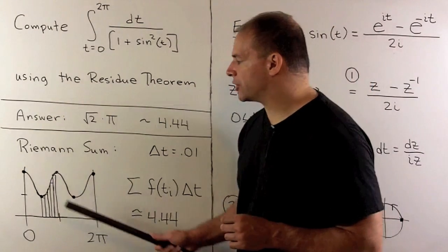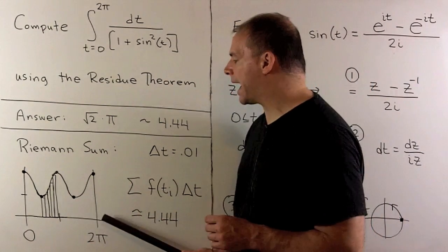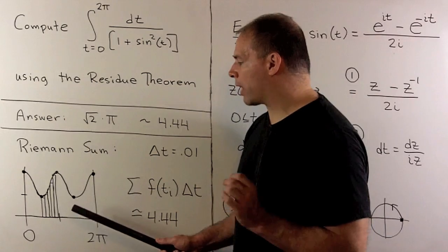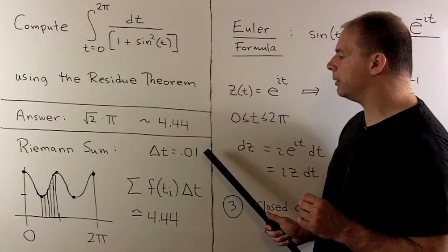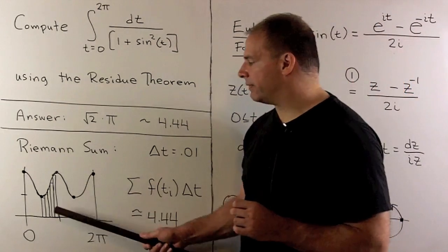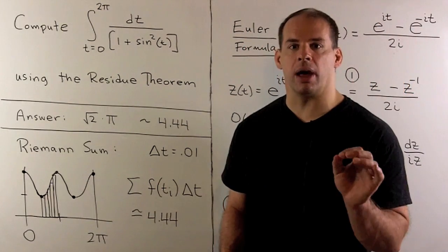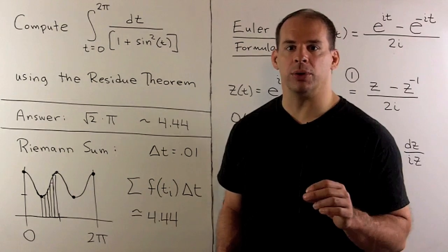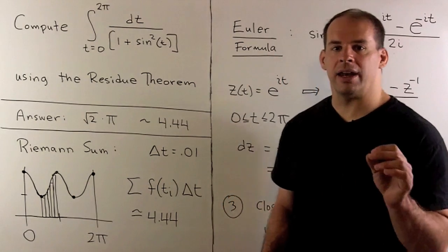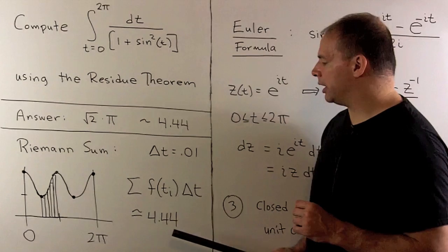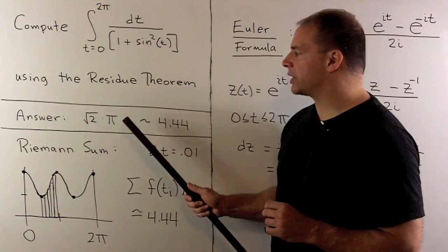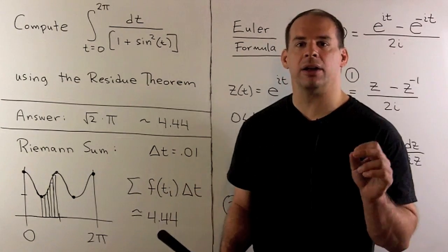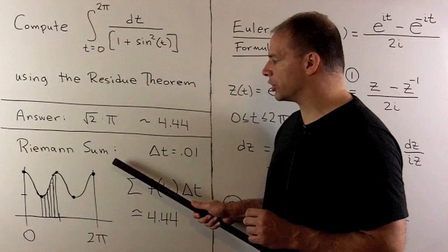We'll sketch the graph of our function, run from 0 to 2π. We're going to fill our region in with rectangles. We'll use base length equal to 0.01. We'll take the area of each rectangle, and then we'll take the sum. Then, I'll get the Riemann sum equal to roughly 4.44. So, square root of 2 times π is a candidate for the area under the graph of our function.